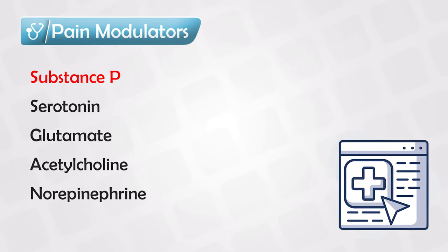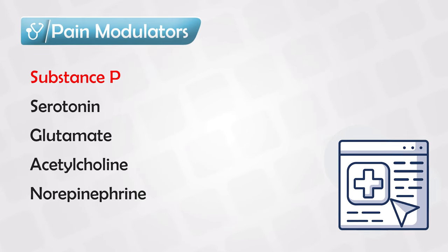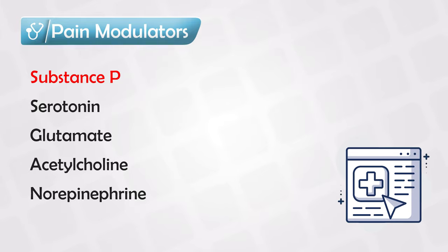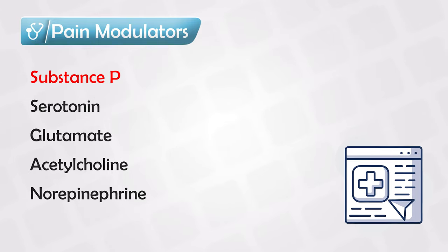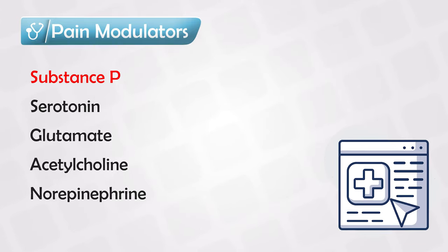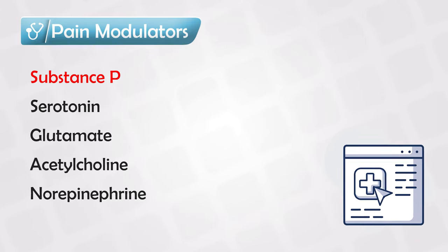The pain substances that can cause pain are substance P, serotonin, glutamate, acetylcholine, and norepinephrine.